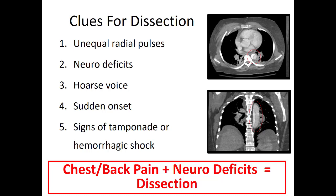Check pulses on both sides and compare, and evaluate for neurological deficits. Depending on where the dissection is, some patients may have a hoarse voice because the nerve that innervates the vocal cords runs right near the aorta — if the aorta is swollen or dissecting, it puts pressure on that nerve and the patient's voice may change. This pain is usually sudden in onset, and if the dissection is severe enough, patients may show signs of cardiac tamponade or even hemorrhagic shock.